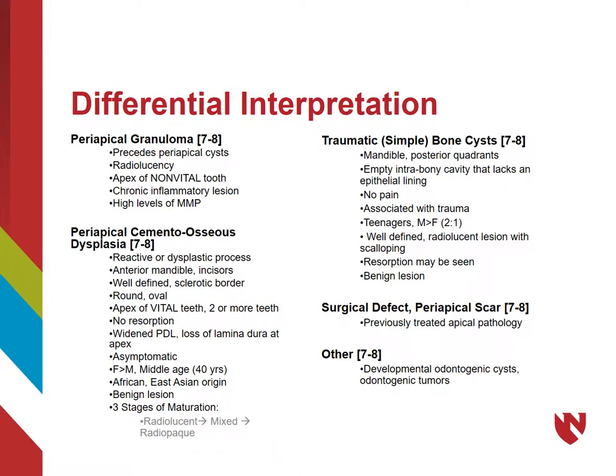When coming up with a differential diagnosis, there are a few other pathologies to consider. First, there are periapical granulomas, which precede the formation of periapical or radicular cysts. Periapical granulomas also present as radiolucencies over the apex of a non-vital tooth. This is a chronic inflammatory lesion and has been shown to have high levels of MMP, matrix metalloproteinase, which is a protease enzyme.